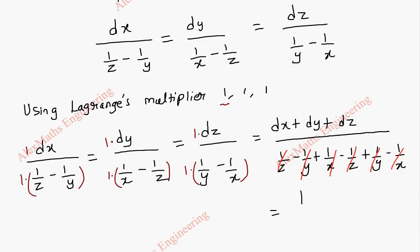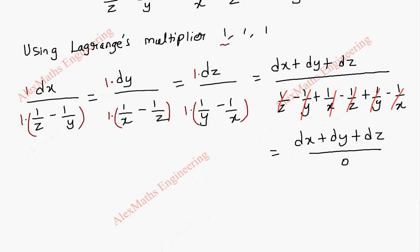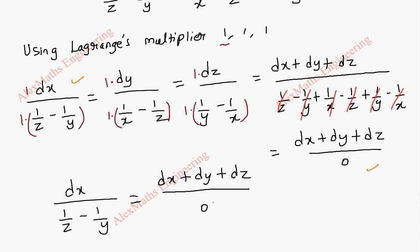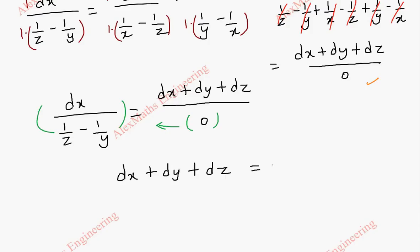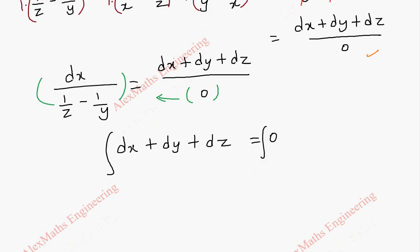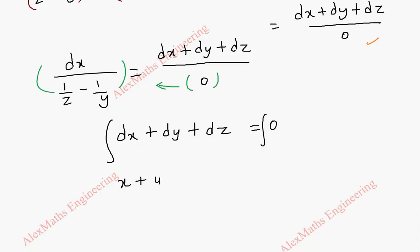So this becomes (dx + dy + dz)/0. Taking the first and last terms: dx/(1/z − 1/y) = (dx + dy + dz)/0. By cross multiplication, the entire term is multiplied by 0, giving dx + dy + dz = 0. Integrating both sides: x + y + z = c₁.